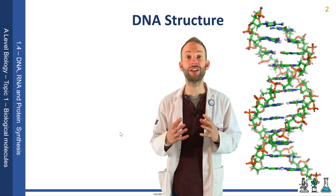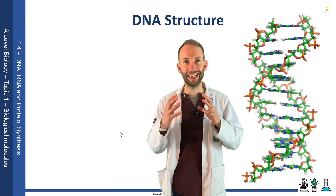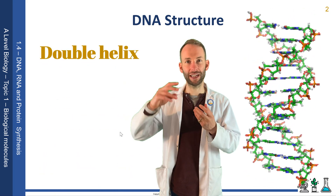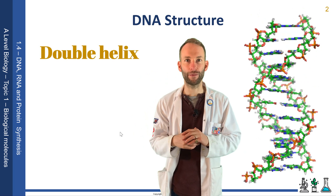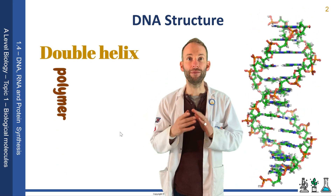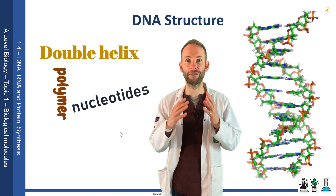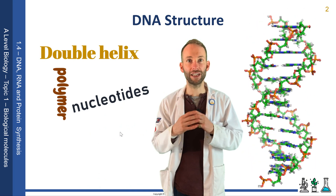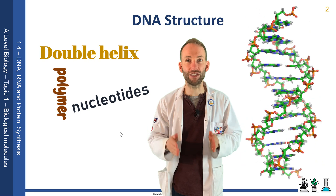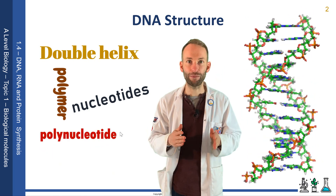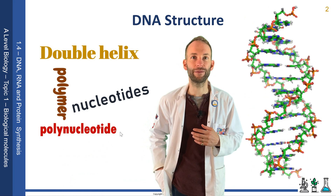The structure of DNA may look really complex, but actually it's quite simple. Its shape is a double helix, which is a twisted ladder. Each side of the ladder is a strand — it's a polymer, made up of many repeating units of nucleotides. The nucleotides come in four slightly different versions, and each DNA strand is a long chain of these nucleotides, so we call each strand a polynucleotide, or a nucleic acid.